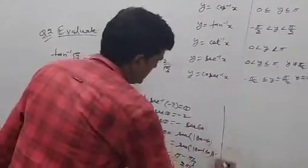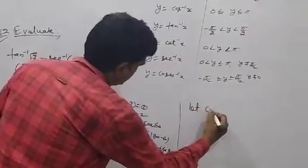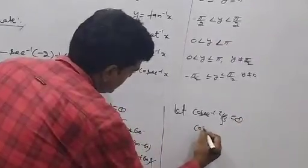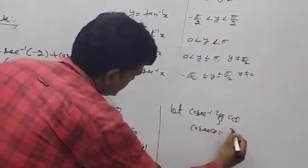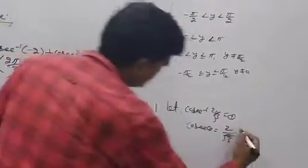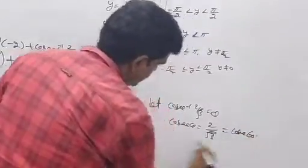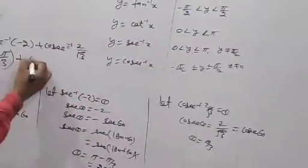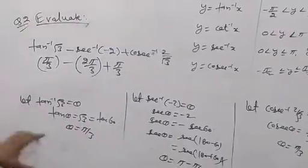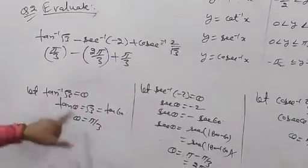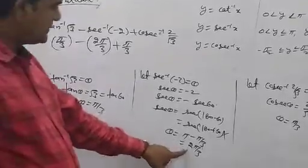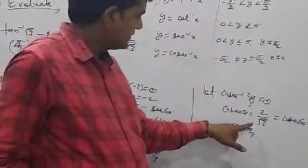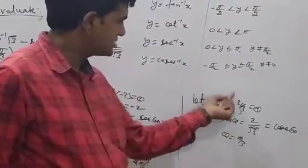Let cosec inverse of 2 by root 3 equal theta. Then cosec theta equals 2 by root 3. Since cosec 60° equals 2 by root 3, theta equals pi by 3. This is the principal value of cosec inverse of 2 by root 3.